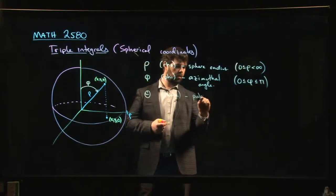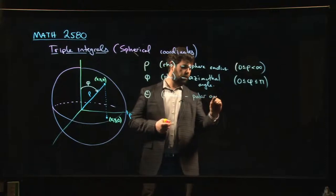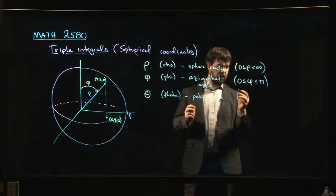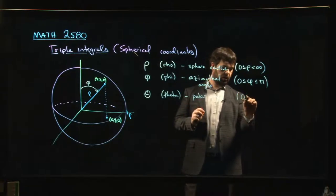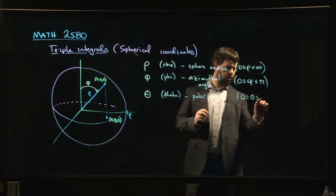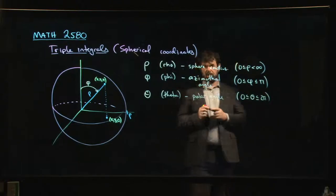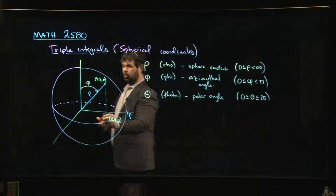This is your polar angle. And this is actually the same theta that we had in polar coordinates. And it runs from zero to two pi, just as before.